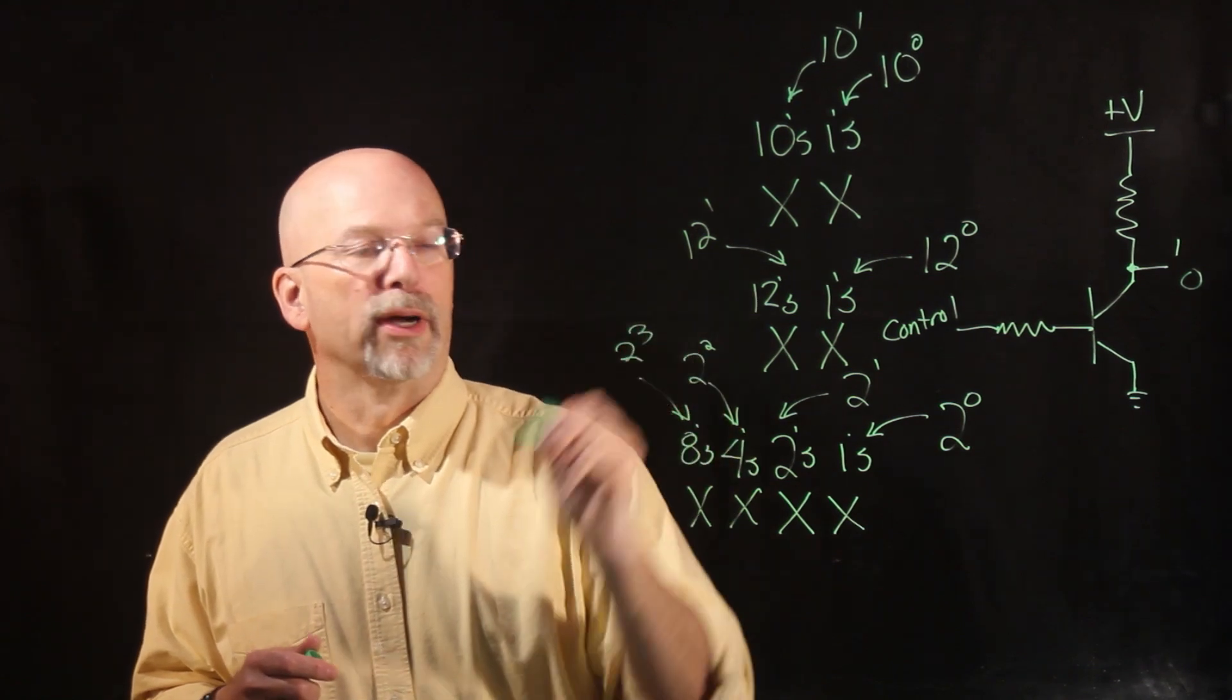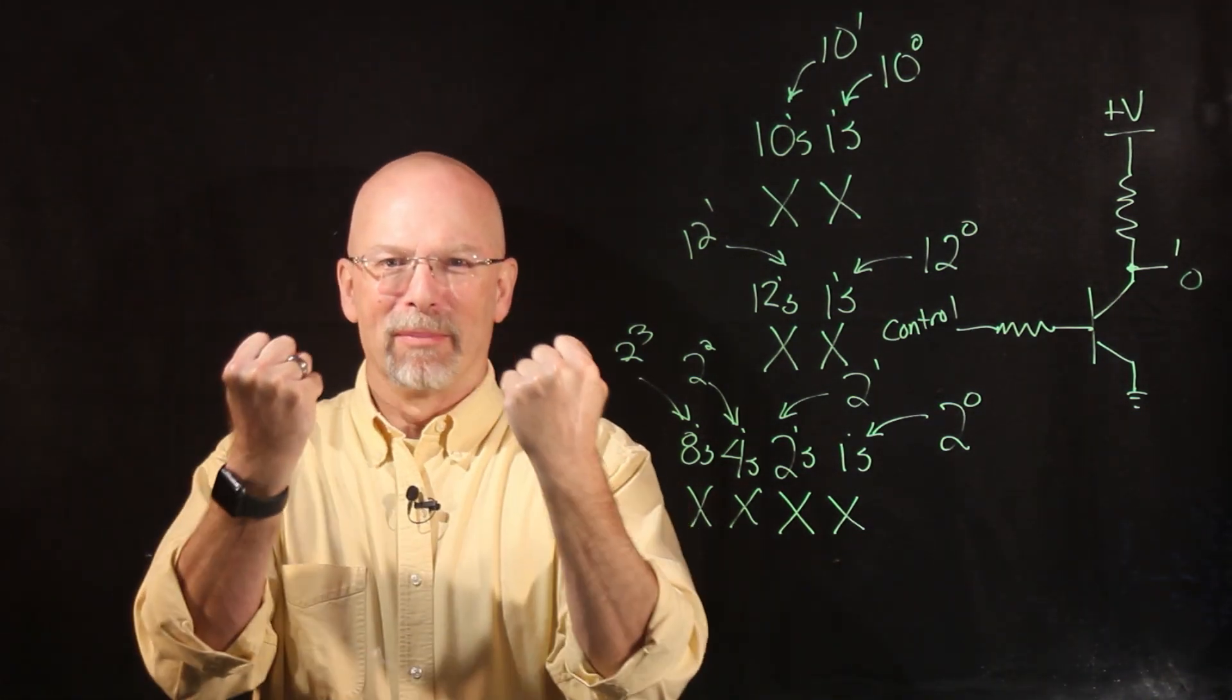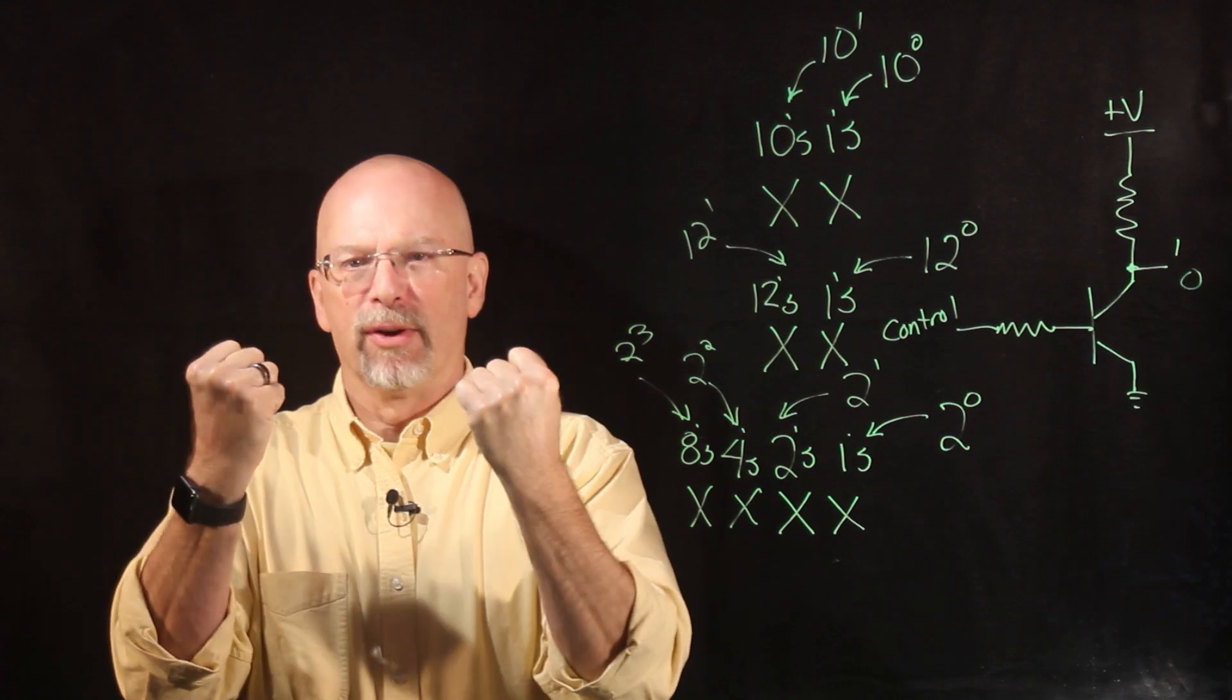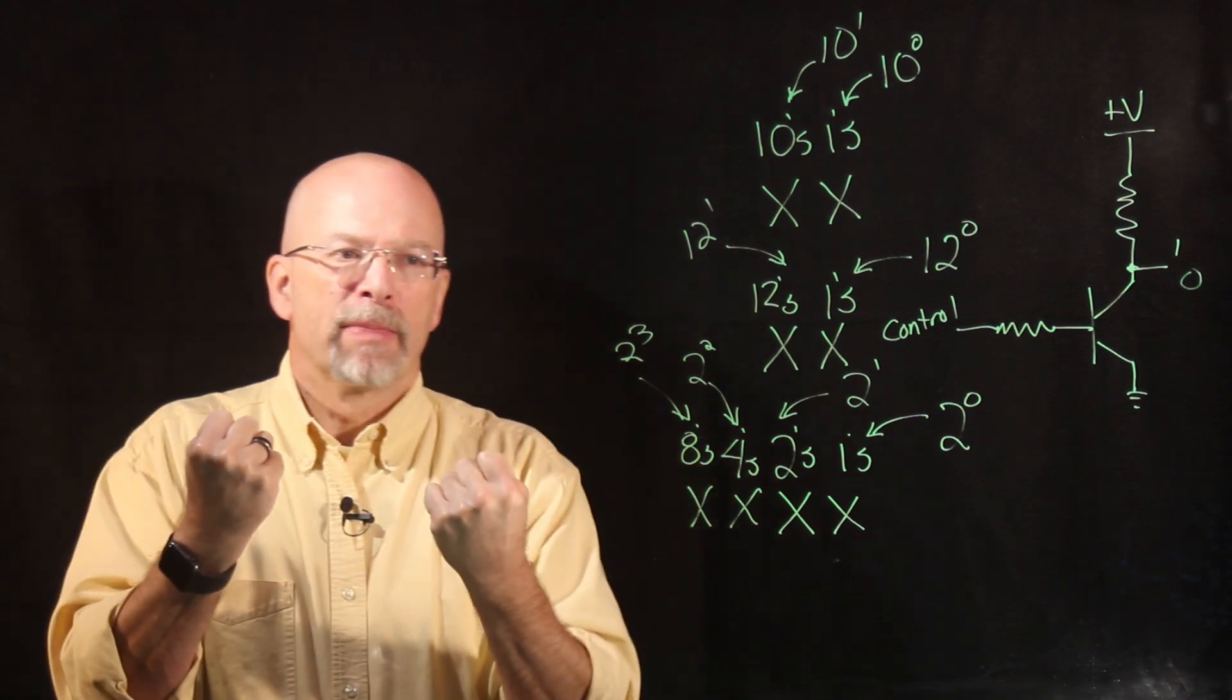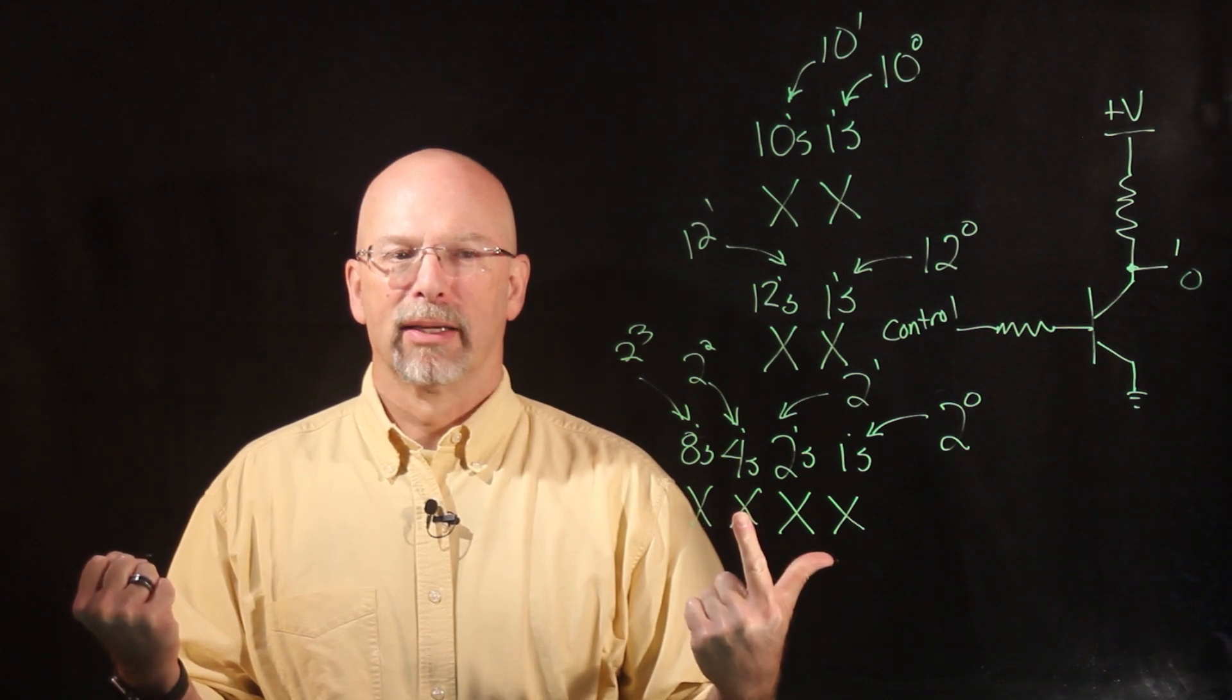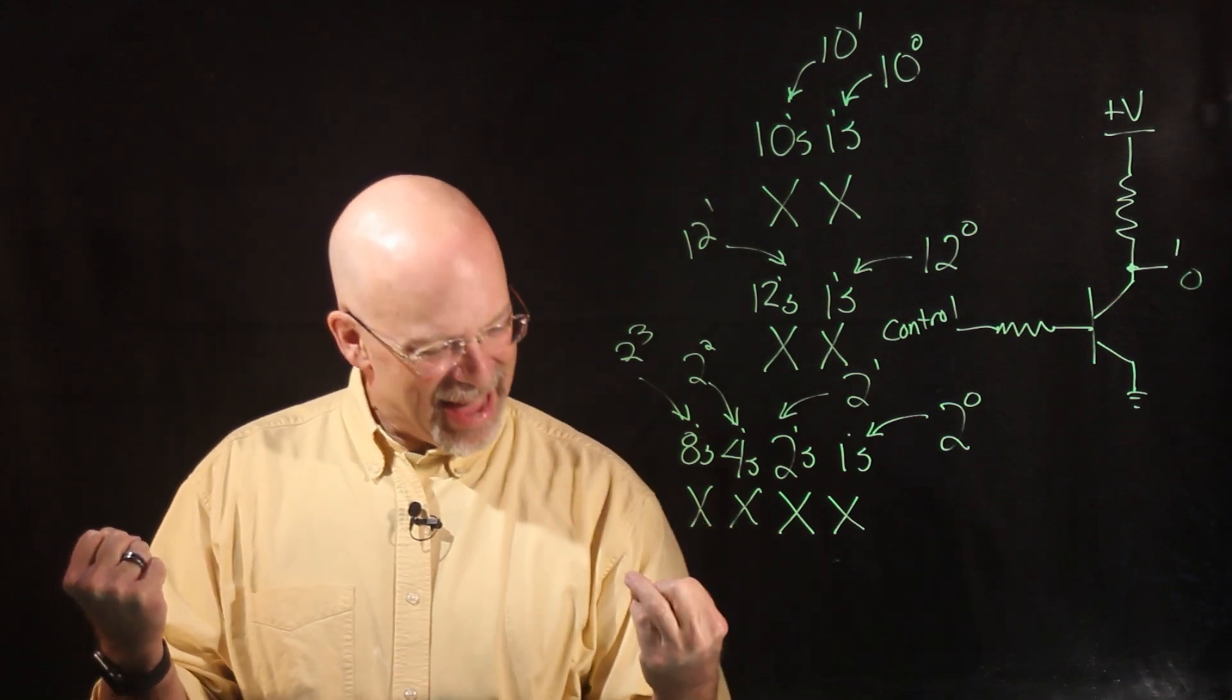All right, now pretend our fingers are transistors. We've got them down, that's a zero. Up, that's a one. And so I have ten transistors, so to speak. They're either on or they're off. On or off. Okay, so the way we count is to go 0, 1, 2, 3, 4, 5, 6, 7, 8, and so on.